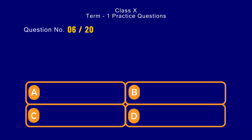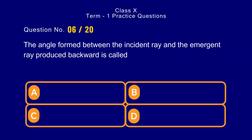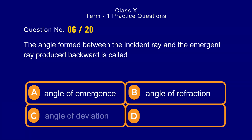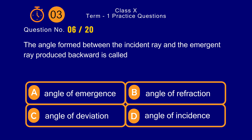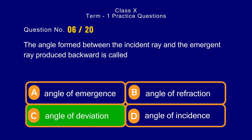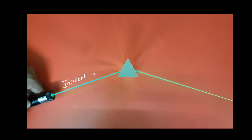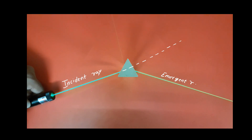Question number 6. The angle formed between the incident ray and the emergent ray produced backward is called — options: a) angle of emergence, b) angle of refraction, c) angle of deviation, d) angle of incidence. The light while passing through a prism deviates from its original direction and emerges out from the prism making an angle with the incident ray known as angle of deviation.